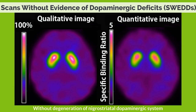Scans without evidence of dopaminergic deficits (SWEDD) is a condition in which DAT scan is performed on a patient diagnosed with Parkinson's disease based on clinical symptoms, but striatal accumulation is not reduced. This condition is found in 3% to 15% of patients diagnosed with Parkinson's disease.